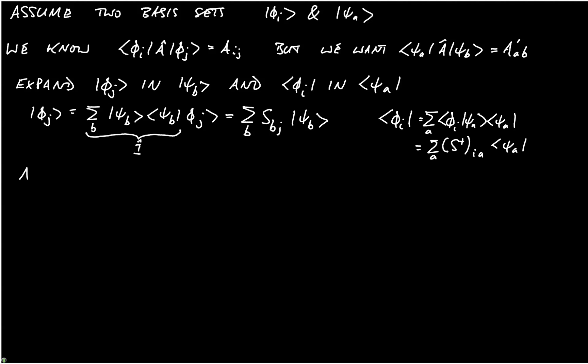So, now let's write A_IJ which is bra phi_I A hat ket phi_J and we will substitute in with these expressions we've just written for the expansion of phi_J. So, we get the sum over A of phi_I psi_A psi_A and then we have A hat the operator and then a sum over B of psi_B psi_B phi_J.